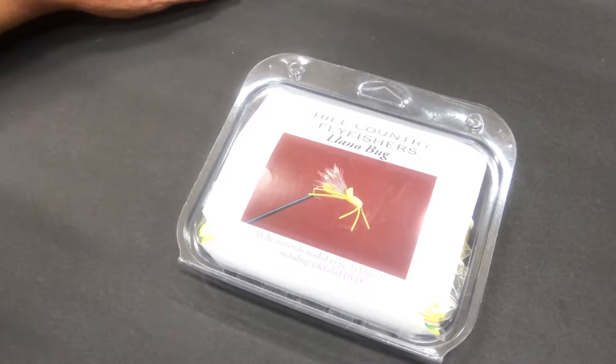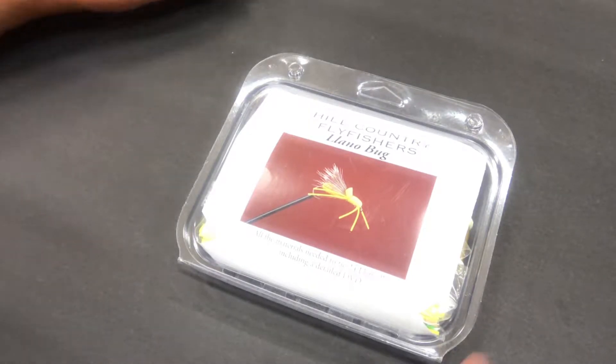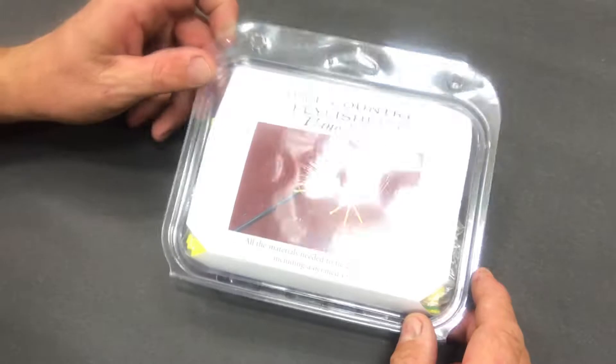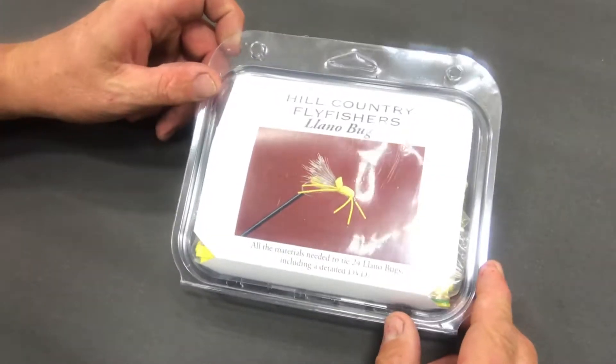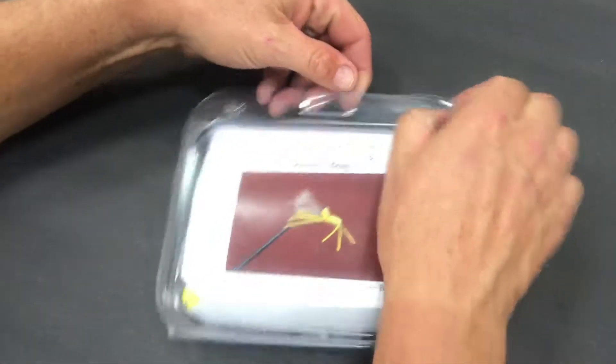Okay, so the easiest way to explain how to tie this fly is to show you all the materials first, and then we'll get down to it. This is the Lanobug kit that I sell. Trying to get it out of the glare. So let me show you what's all inside.